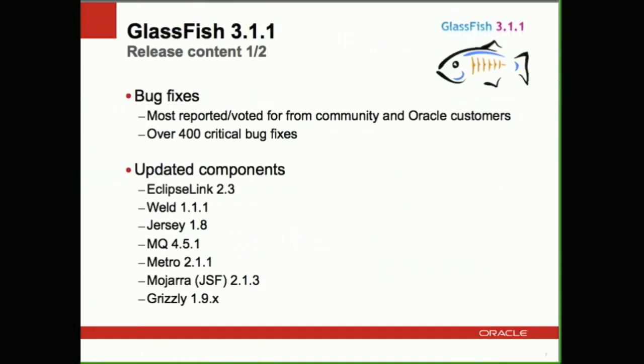Talking about specific content for the 3.1.1 release: bug fixes. We heard feedback loud and clear from the community and customers on what should be fixed. This accounts for a total of 400 critical bugs fixed in this release, a good number of which were reported by you, the GlassFish users and customers.